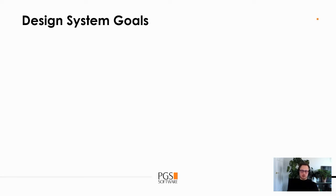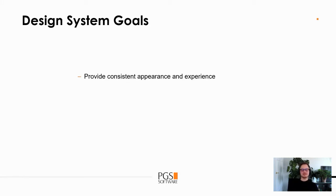So we know what a design system can consist of. Let's see what the goals of a design system are. Obviously, the most important and most obvious goal is to keep the user interface consistent, so that a user of your final product can be sure they're still in your application and can focus on their task instead of wondering if their work will be saved if they click a button.